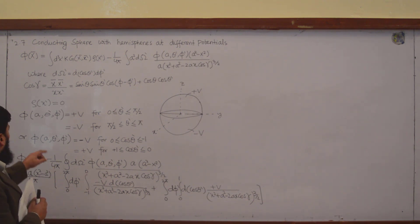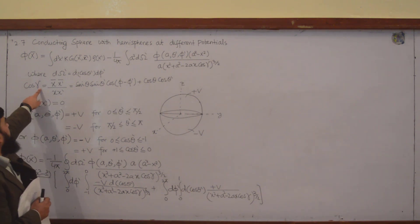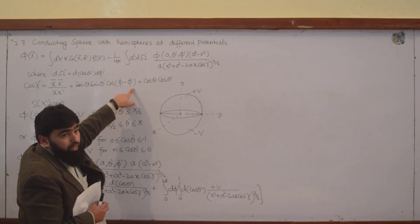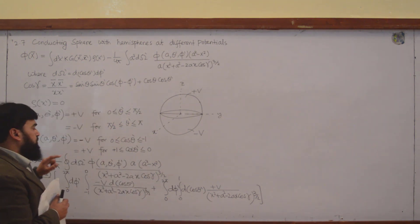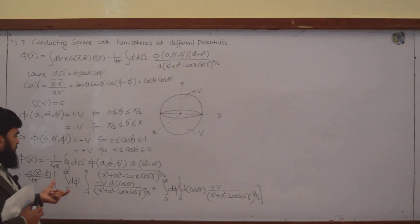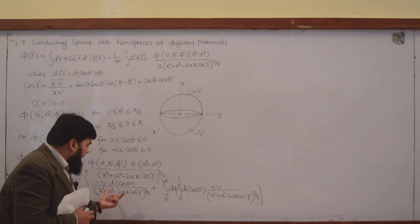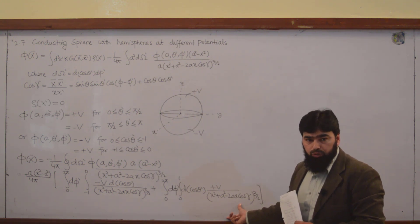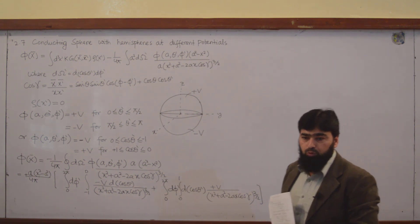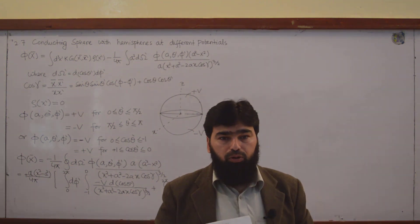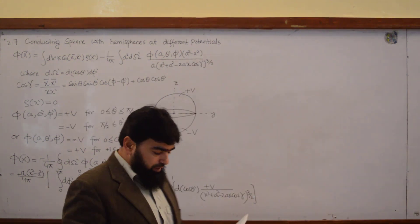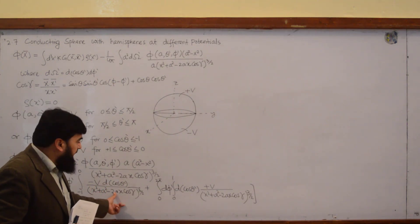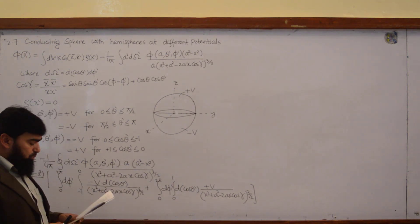But I will have to take care of one thing: cos(γ) depends on θ and θ' as well as φ and φ', so it depends on both. I will have to split this integral first, because to solve it all at once is very difficult. So we will have to do it in parts with the help of substitutions.